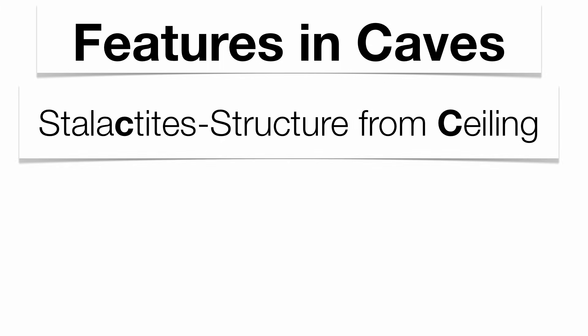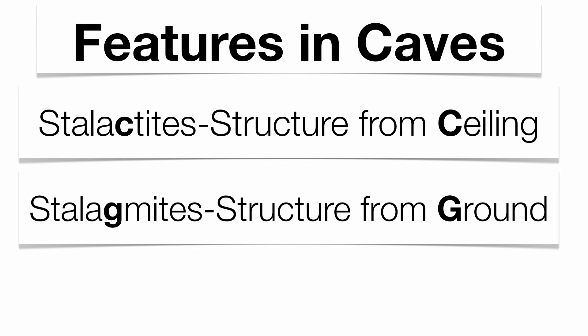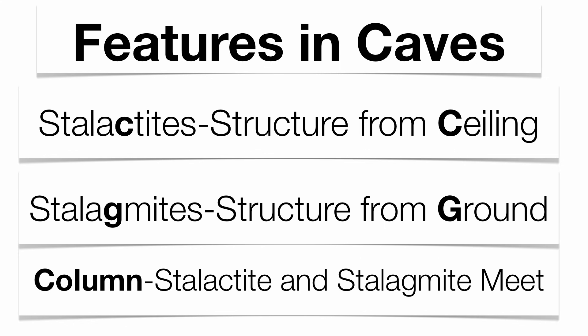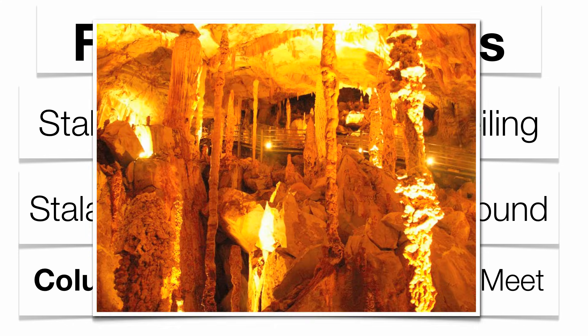There are some features in the cave you should know about. Caves are often under the water table, so water will drip through the joint system in the ceiling. If that water is loaded with enough calcite, it will evaporate off the ceiling and create a structure called a stalactite over millions of years. If the drip is big enough and falls to the floor, that structure grows upward from the ground — that's called a stalagmite. If they meet up with each other, they're called a column. This picture shows all those features.